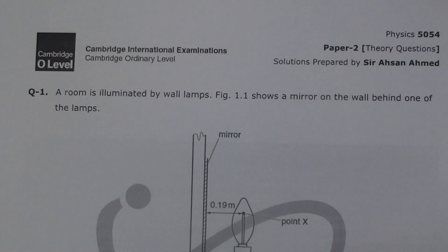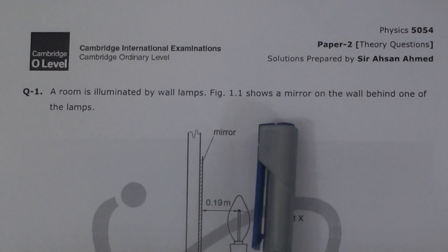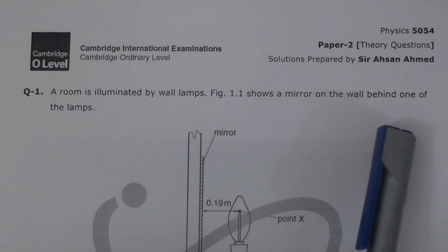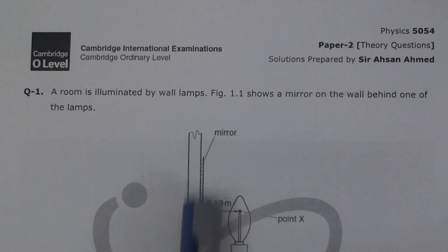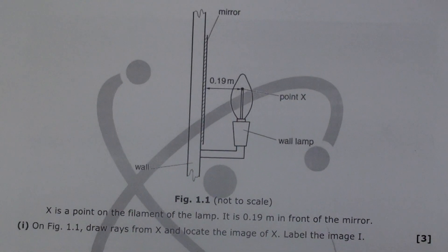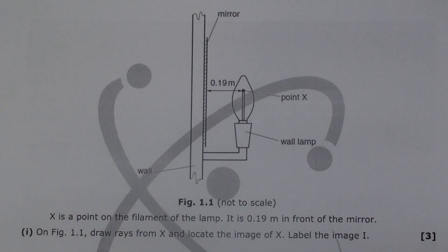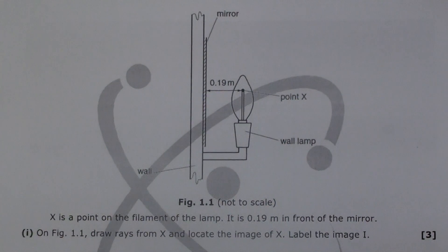In the first one, a room is illuminated by wall lamps. You can see the wall lamp clearly here. This figure shows a mirror on the wall behind one of the lamps. We have to make a diagram, so we need to be sure what exactly is being asked.